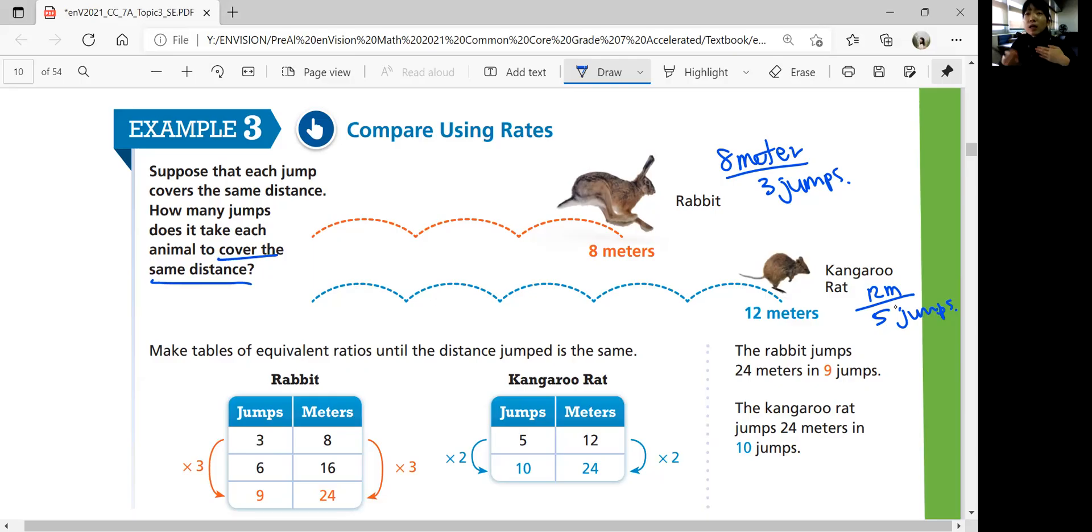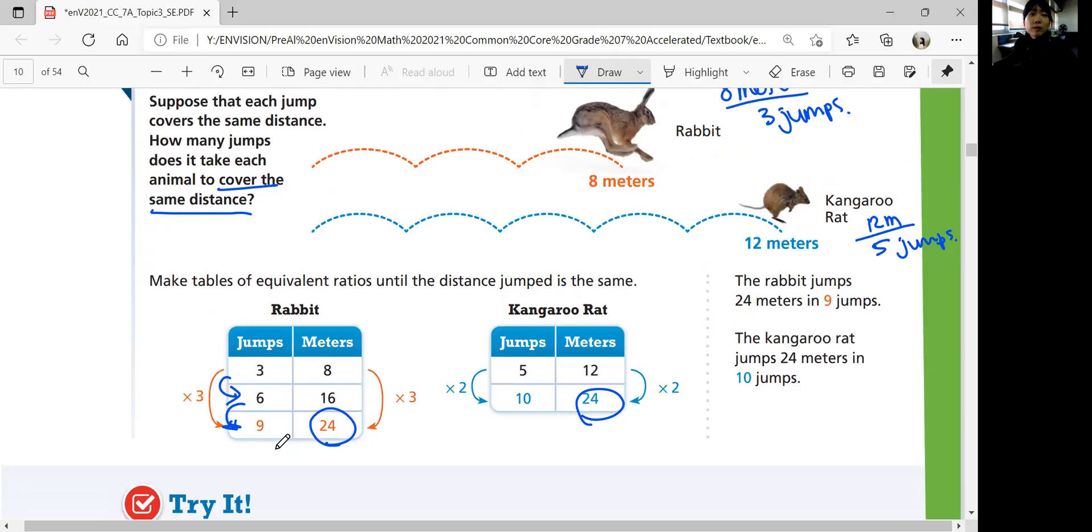You can, however, look at the meters because we want to see the same distance. 8 and 12, if they keep multiplying 8 and 12, what would be the same distance? You can make a table. For rabbit, if he jumps three more jumps, he would go 16 meters. If he jumps three more jumps from there, he would go 24 meters. Kangaroo rat, if he jumps one more of five jumps, he would go 24 jumps. We have the same meter now. For a rabbit, he just needs to jump nine times. Kangaroo rat just needs to jump 10 times to jump the same distance, which is 24 meters.